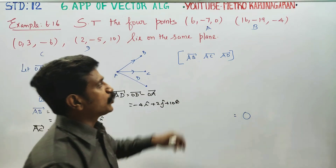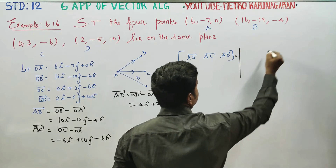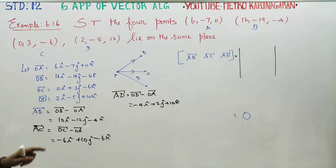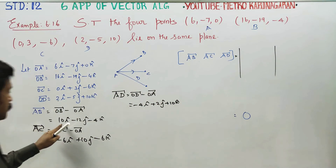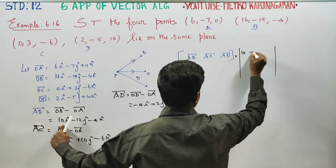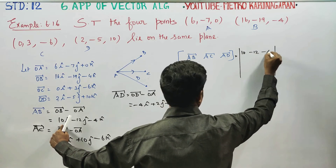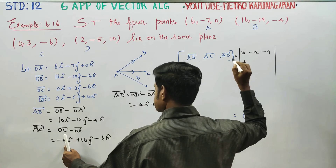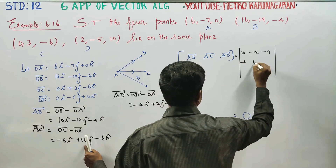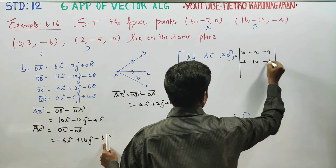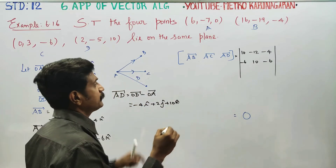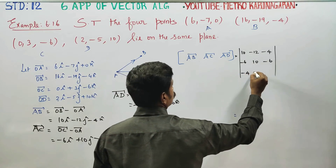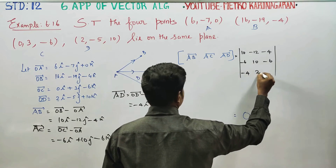Now we prove the coplanar condition using the scalar triple product — that is the determinant. The values are: first row 10, minus 12, minus 4; second row minus 6, 10, minus 6; third row minus 4, 2, and 10.